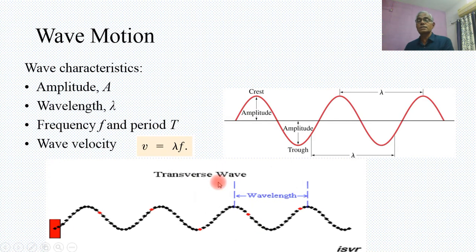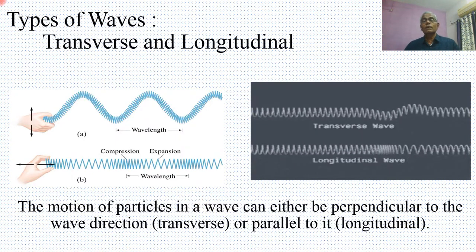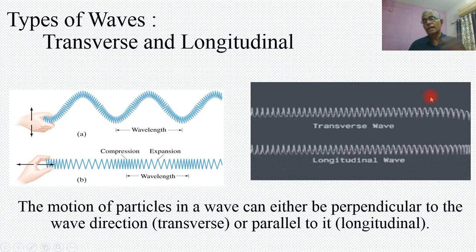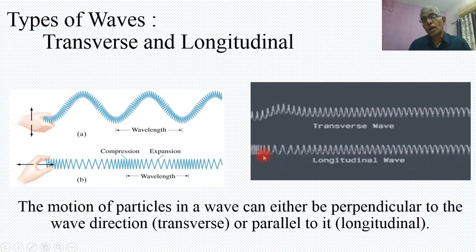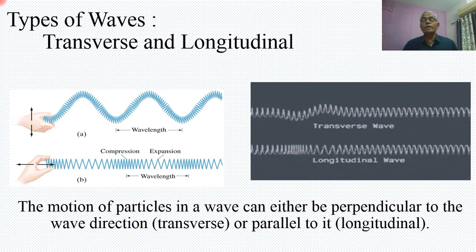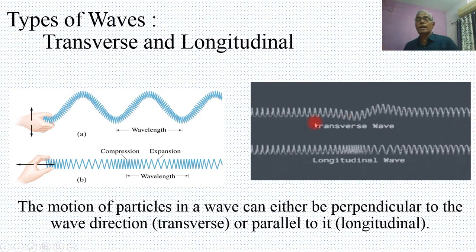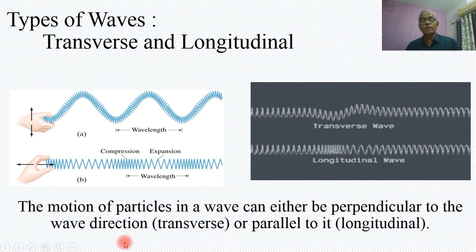I am talking about the transverse wave. There are two kinds of waves: longitudinal waves and transverse waves. The motion of the particle in a wave can either be perpendicular to the wave direction. If the wave is progressing from left to right, and the particles are moving in the upward and downward direction — perpendicular to propagation — that kind of wave is called a transverse wave.